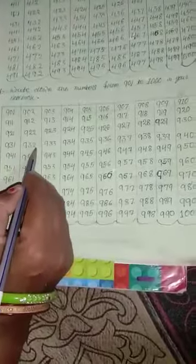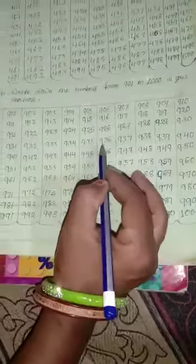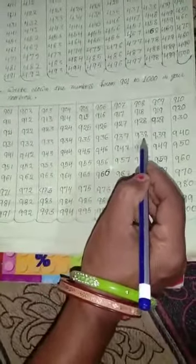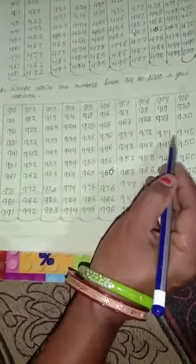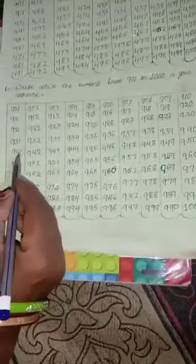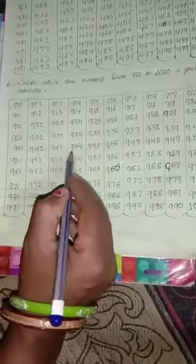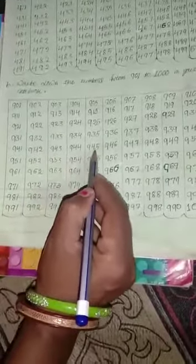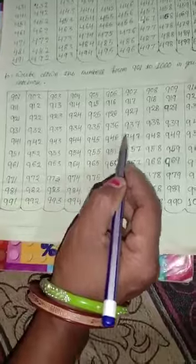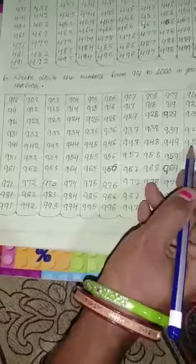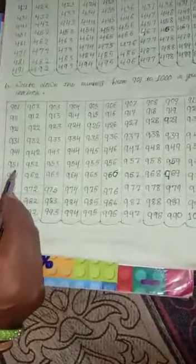931, 932, 933, 934, 935, 936, 937, 938, 939, 940, 941, 942, 943, 944, 945, 946, 947, 948, 949, 950.